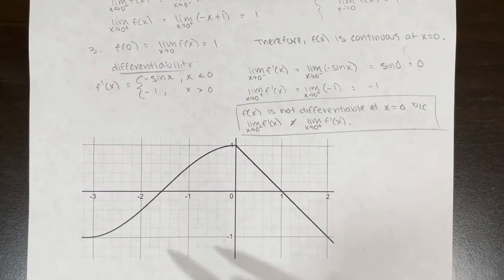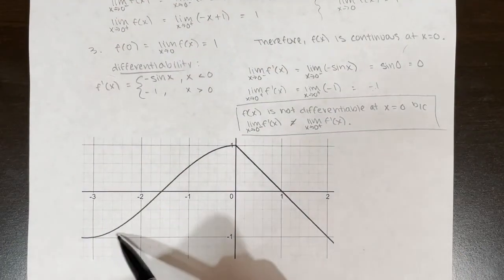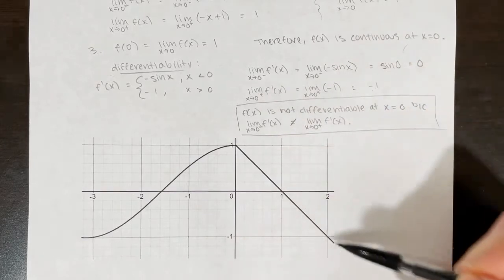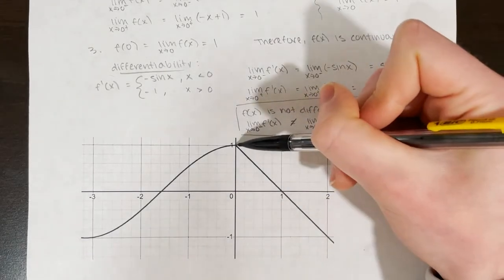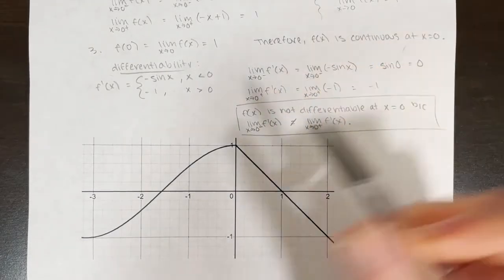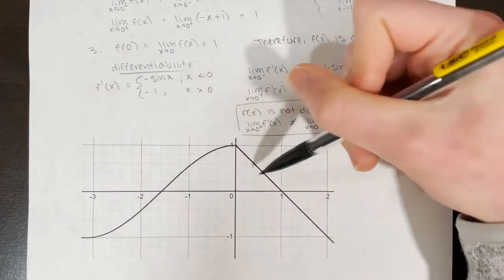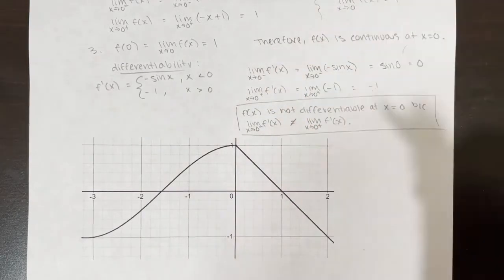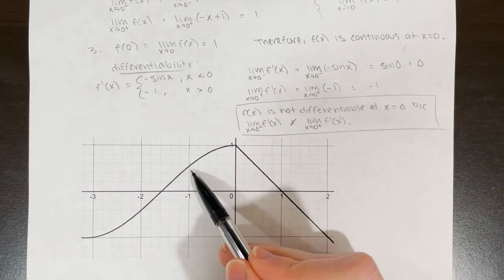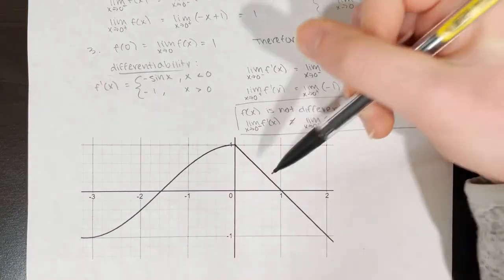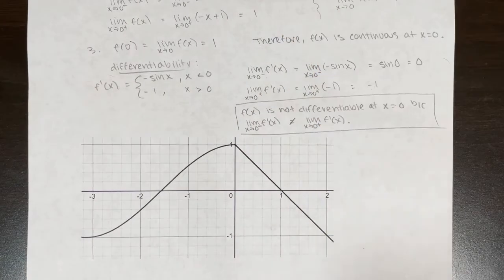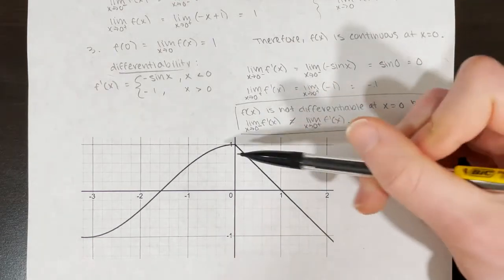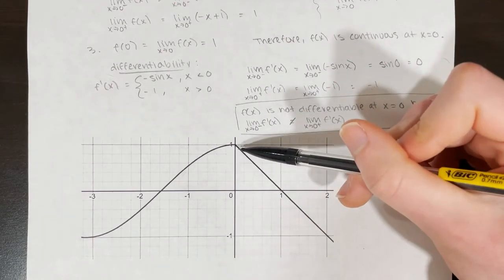Looking at the graphs of these two functions — the cosine curve and negative x plus 1 — this makes sense because we see that it's not a smooth pass-off between the cosine function and the linear function. The slope of the tangent line coming in from the left side is not equal to the slope of the tangent line coming in from the right side. Therefore, the function is not differentiable at x equals 0, even though it is continuous at x equals 0.